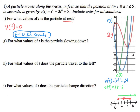We would set 3t² minus 6t equal to zero and solve. To do that, you pull out a GCF of 3t, giving you 3t times (t minus 2) equals zero, and then you set each factor equal to zero. When you divide by three you get t equals zero, and when you add two over you get t equals two. So you get the same answers whether you solved it algebraically or pictorially — either way works.